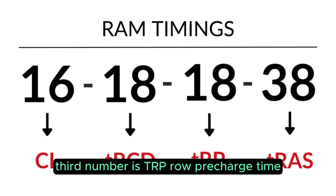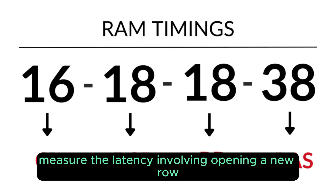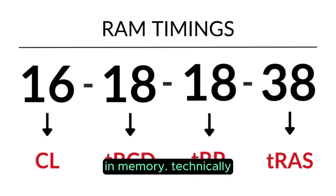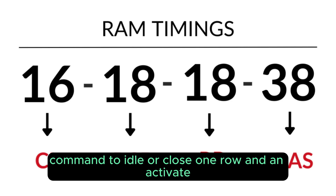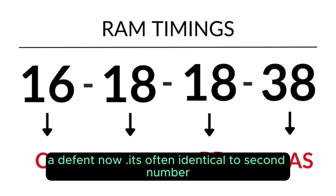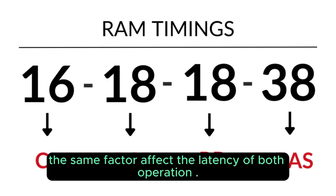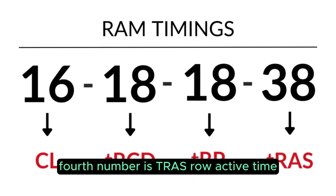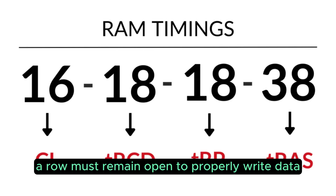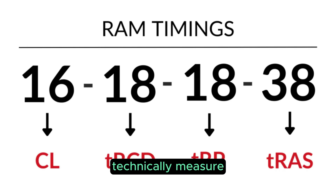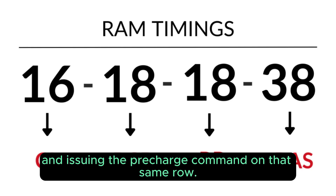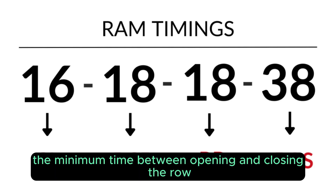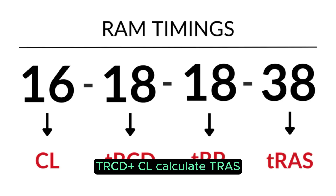The third number is TRP, or Row Precharge Time, which measures the latency involved in opening a new row in memory. Technically, it measures the latency between the precharge command to close one row and the activate command to open a different row. It is often identical to the second number, as the same factors affect the latency of both operations. The fourth number is TRAS, or Row Active Time, which measures the minimum number of cycles a row must remain open to properly write data, specifically between an active command and the precharge command on the same row.